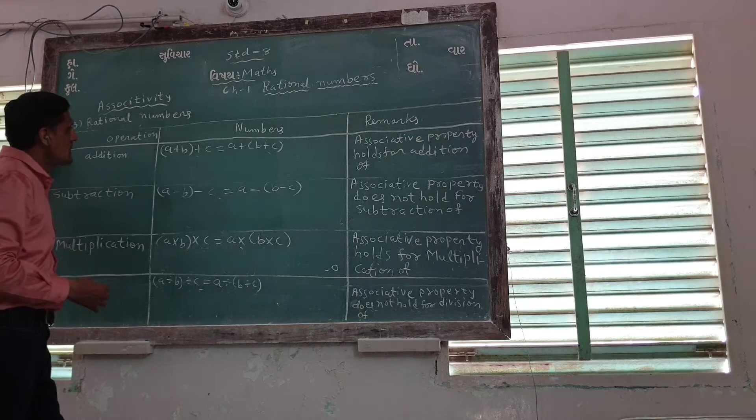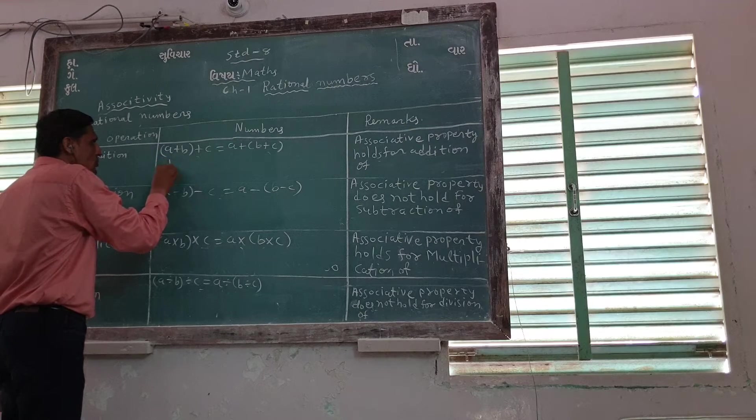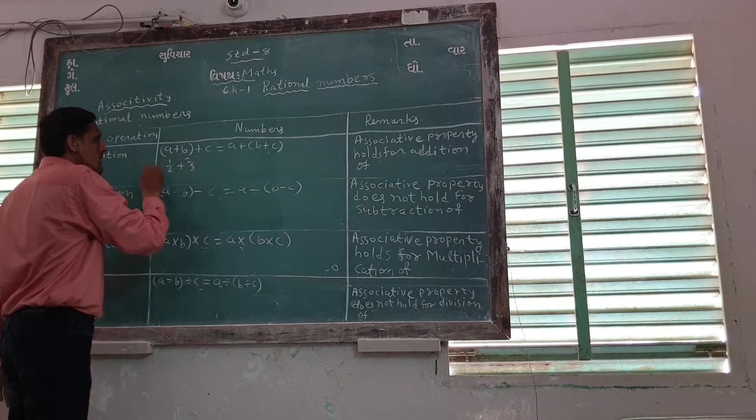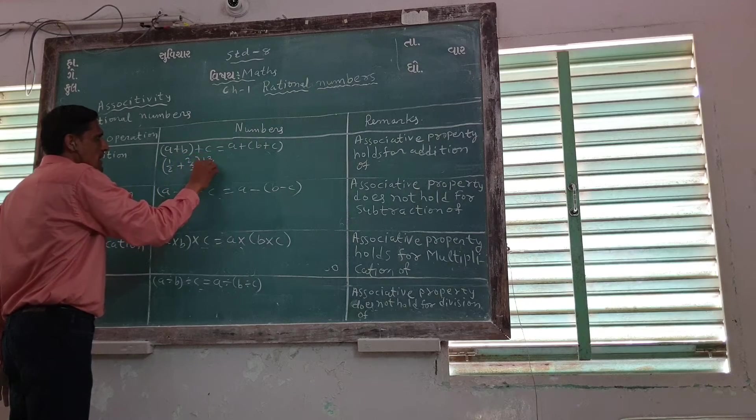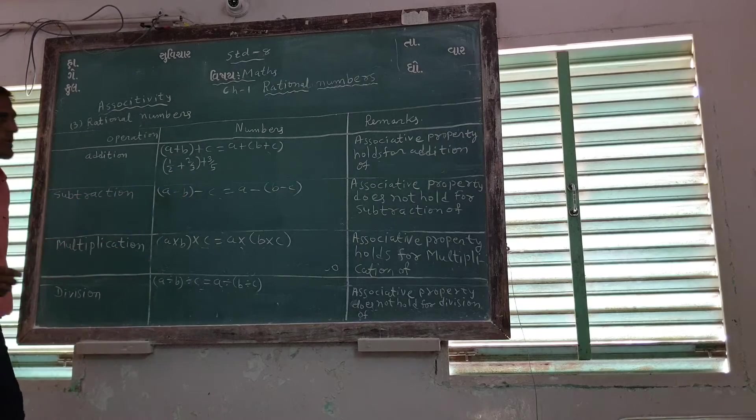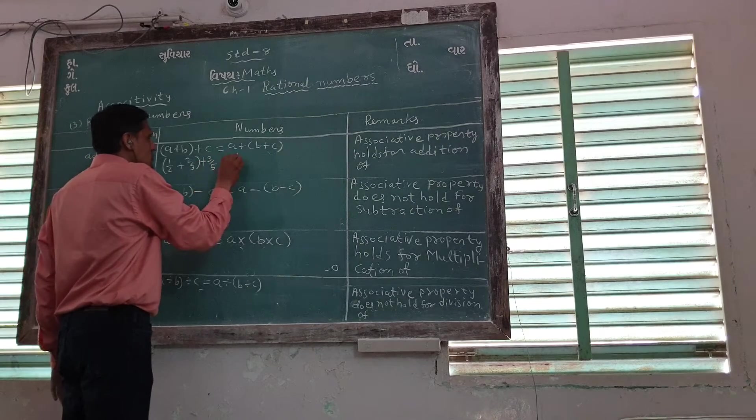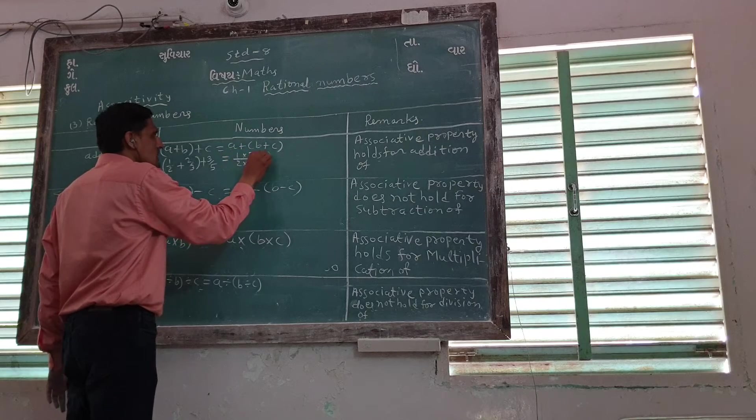So addition, we will give register numbers. Suppose we have 1 by 2, 2 by 3, and 3 by 5. Right, so LCM of 2, 3, 6. 1 by 2, 2, 3, 6.